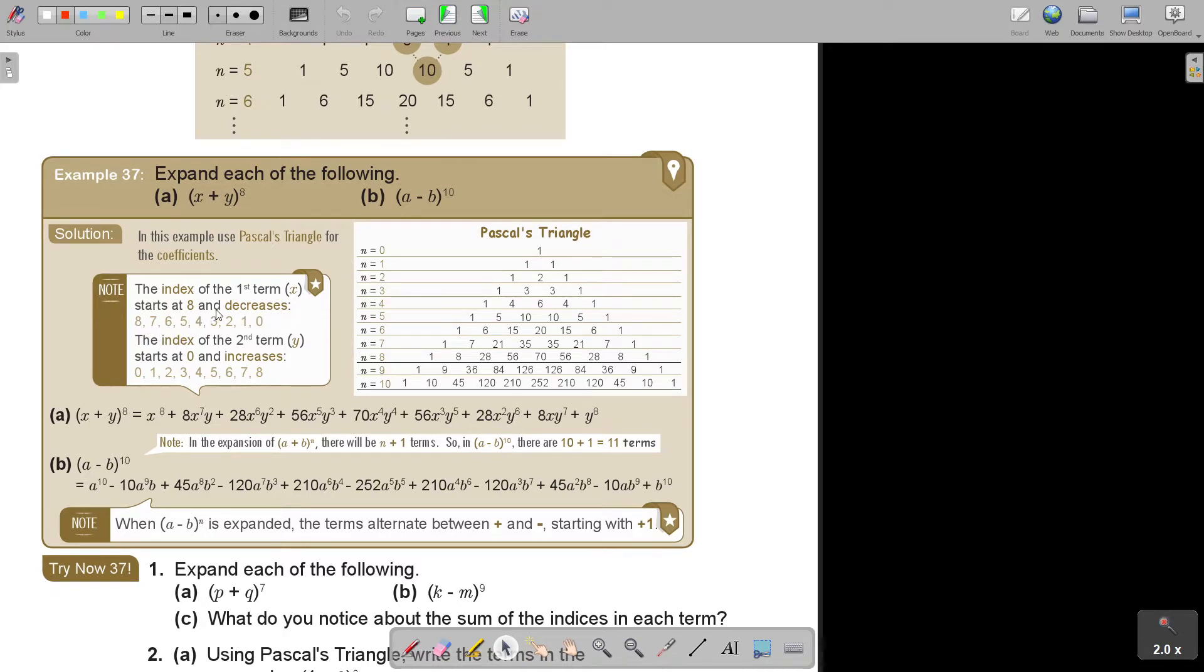The investigation reveals the following. The coefficients of the terms in the expansion form a pattern represented by Pascal's triangle as shown below. And that I showed you how you continue doing this. But let's look at an example. Let's see how we can use it if we want to expand brackets.